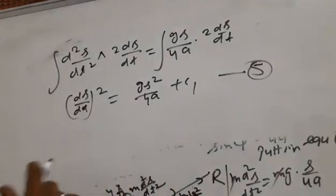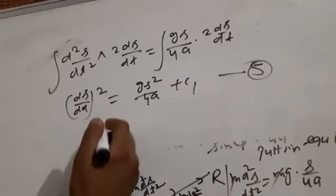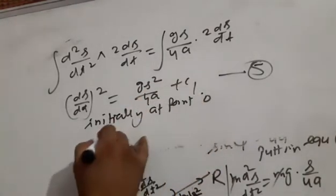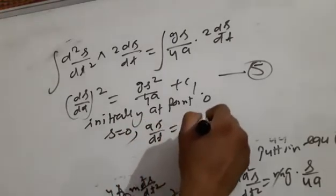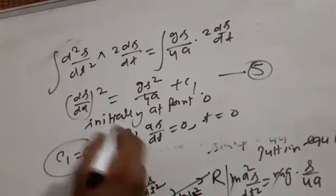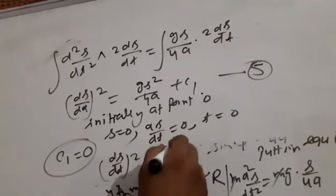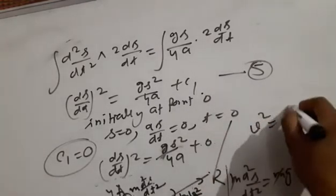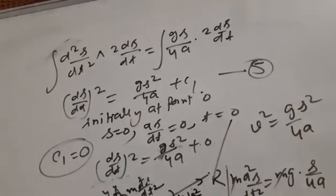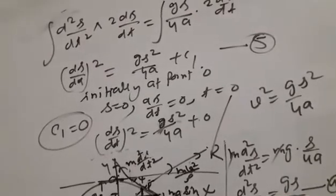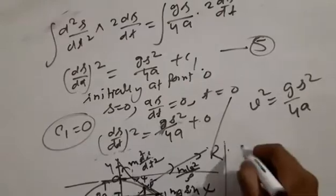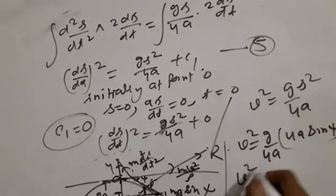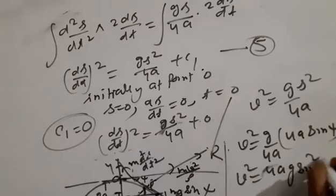Here C₁ is an integral constant. Initially, at point O (the vertex), s = 0 and ds/dt = 0. Substituting these initial conditions into equation number 5 gives 0 = g·(0)²/(4a) + C₁, so C₁ = 0. Therefore: (ds/dt)² = g·s²/(4a) — equation number 6.